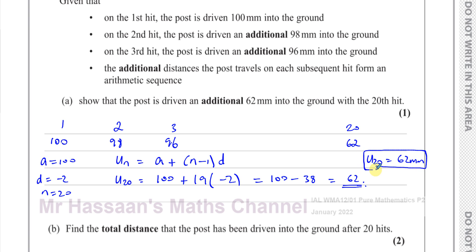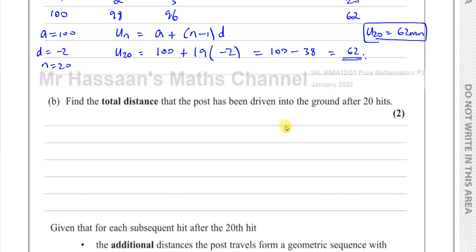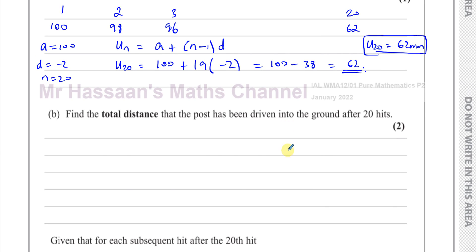That's the answer for part A. Part B says: find the total distance that the post has been driven into the ground after 20 hits. We need the total sum of all those first 20 additional distances — that is, 100 plus 98 plus 96 and so on — added together.